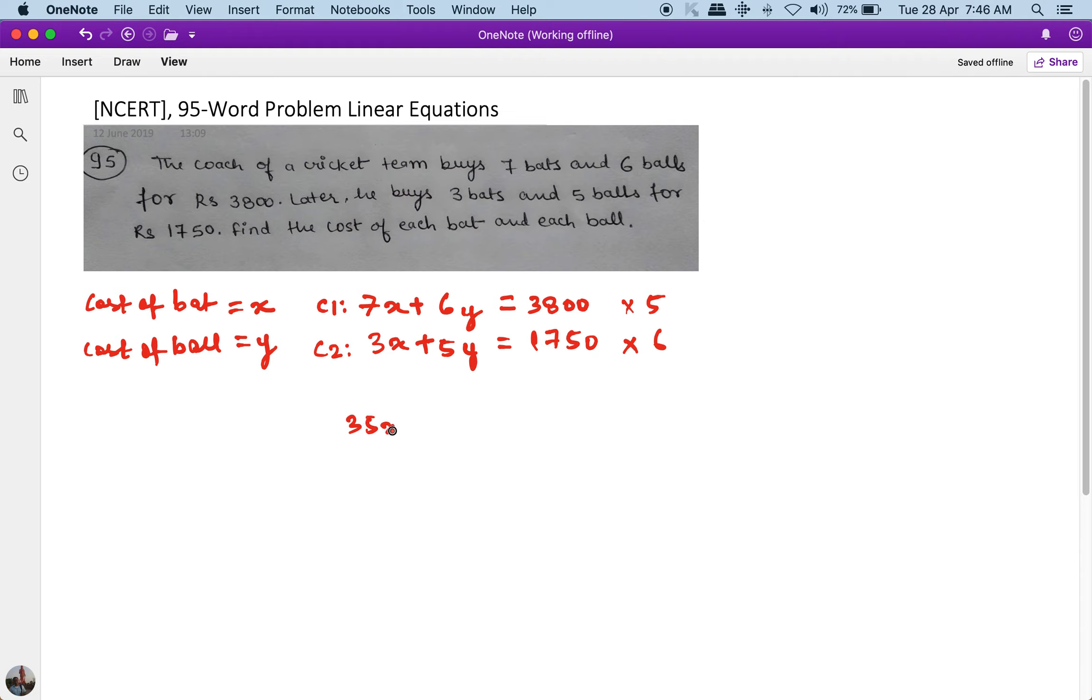get 35x plus 30y equals 19000. And multiplying the second by six, I get 18x plus 30y. 1750 times 6, let me calculate: that's 10500.